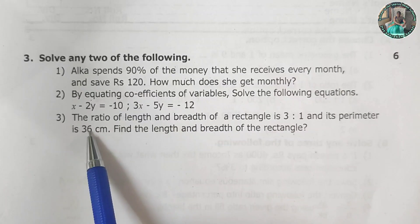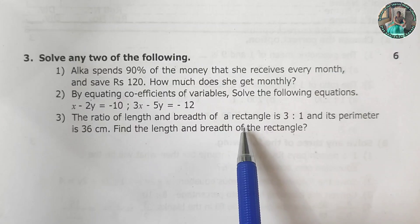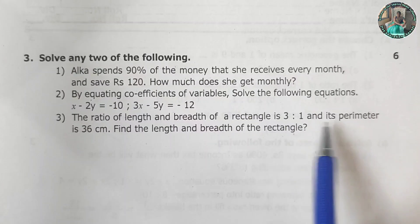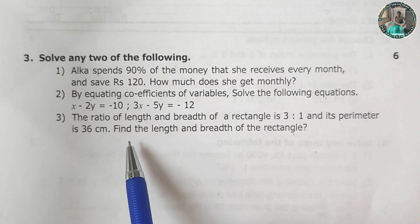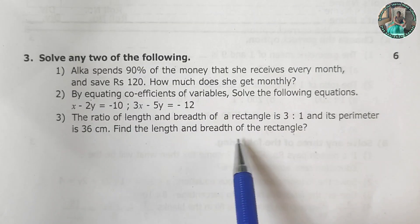3. The ratio of length and breadth of the rectangle is 3 to 1. And its perimeter is 36 cm. Find the length and breadth of the rectangle.